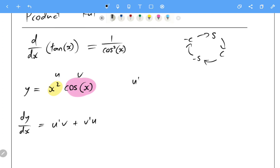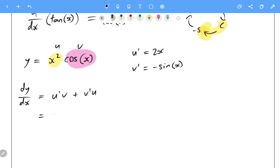In this particular case, u dash is just 2x, v dash is just negative sine of x, right, because we are cos of x going to negative sine. Alrighty, so now we've just got to apply it to the rules.